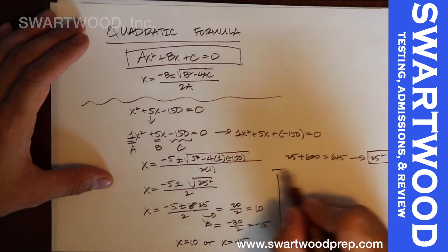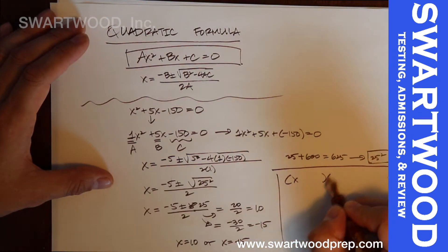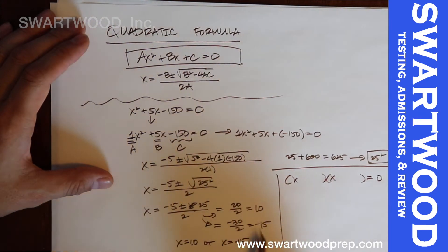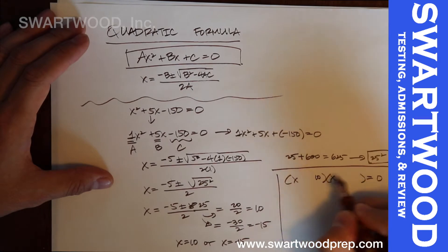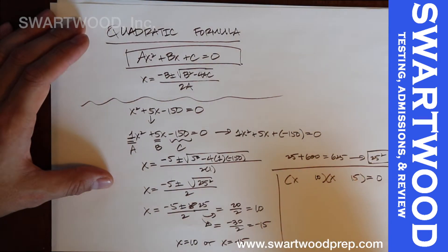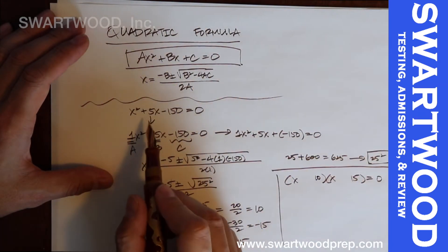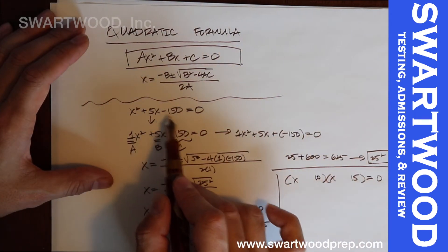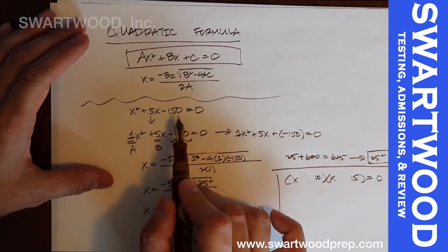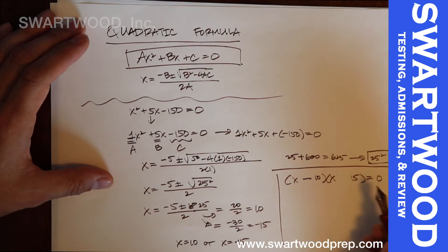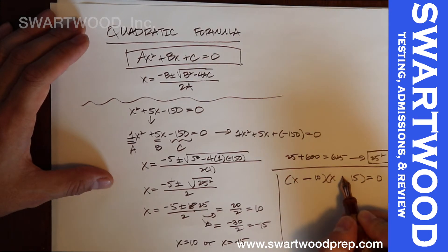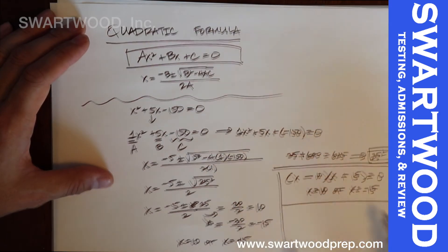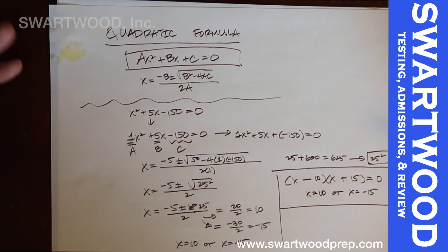As a side note, you could have factored this. Find two numbers that multiply to negative 150 and add to 5. Guessing 10 and 15 — they multiply to 150, and since we need negative 150, one must be negative. Negative 10 plus 15 adds to 5, so the factors work, giving x equals 10 or x equals negative 15. But the point of this video was to apply the quadratic formula.